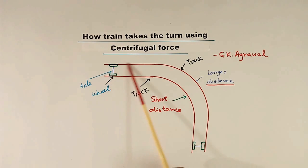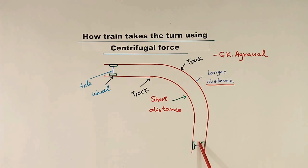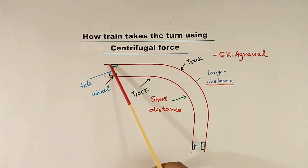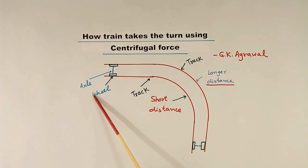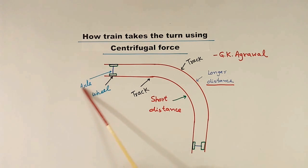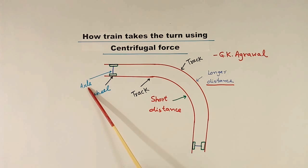Here I have shown a track, and this track is not in a straight line — it is bending. Suppose this is a train, moving like this. This and this are two wheels, and in the middle, this is the axle. These two wheels are connected to each other using the axle.